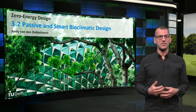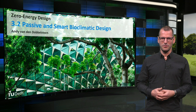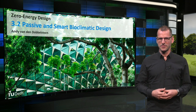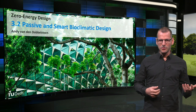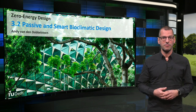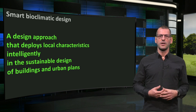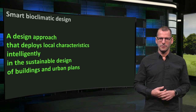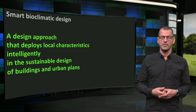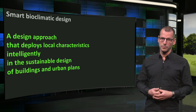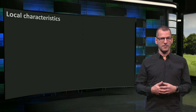Welcome back! As part of step 1, REDUCE, today I am going to show you a lot of examples of passive and smart bioclimatic design. Passive design refers to solutions that do not require auxiliary technology to be effective. This is the definition of smart bioclimatic design: a design approach that deploys local characteristics intelligently in the sustainable design of buildings and urban plans. Now let's see what these local characteristics can entail.